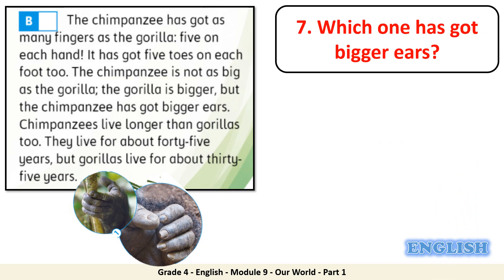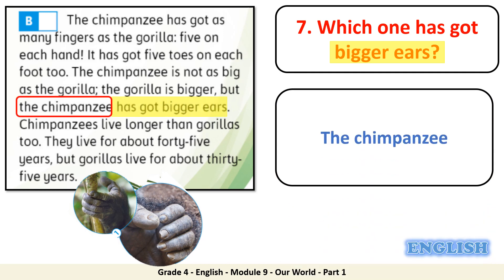Question 7: which one has got bigger ears? Can you spot the keyword? Bigger ears. Can you find it in the text? The answer is the chimpanzee. Well done!